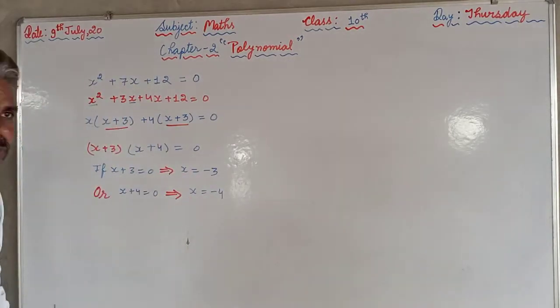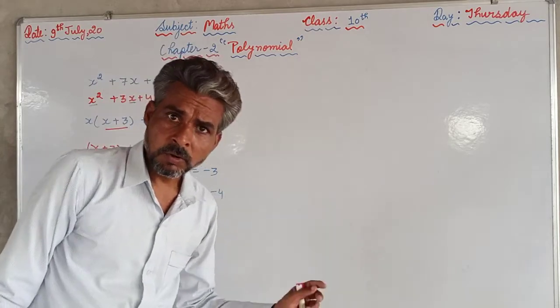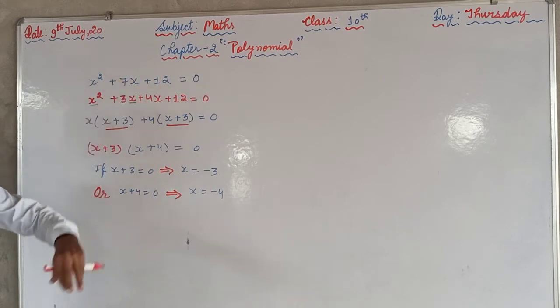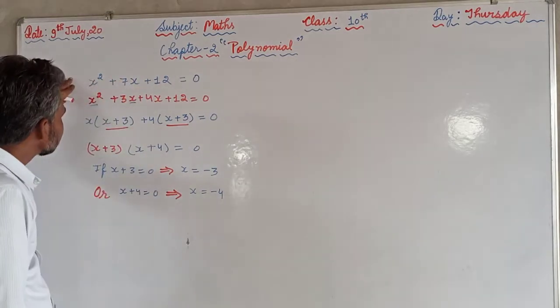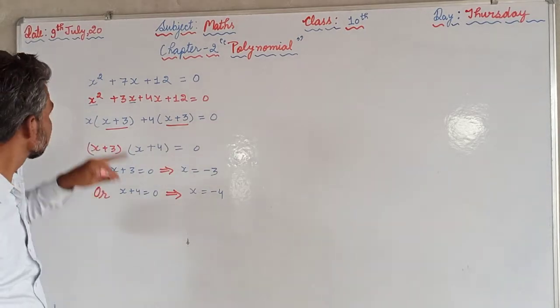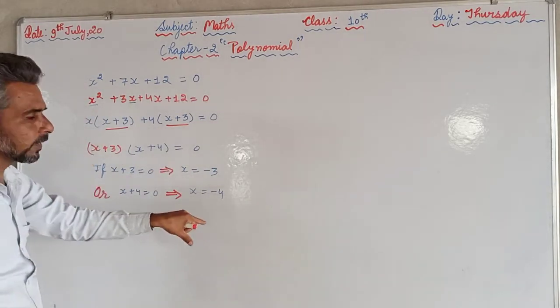So these are the two zeros, or two solutions, or two roots of this quadratic equation. We have to keep in mind, what is the degree of this equation? That is 2. So we will get two roots. Degree is 2, the values of x is 2.